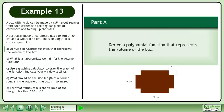A box with no lid can be made by cutting out squares from each corner of a rectangular piece of cardboard and folding up the sides. A particular piece of cardboard has a length of 20 cm and a width of 16 cm. The side length of a corner square is x.